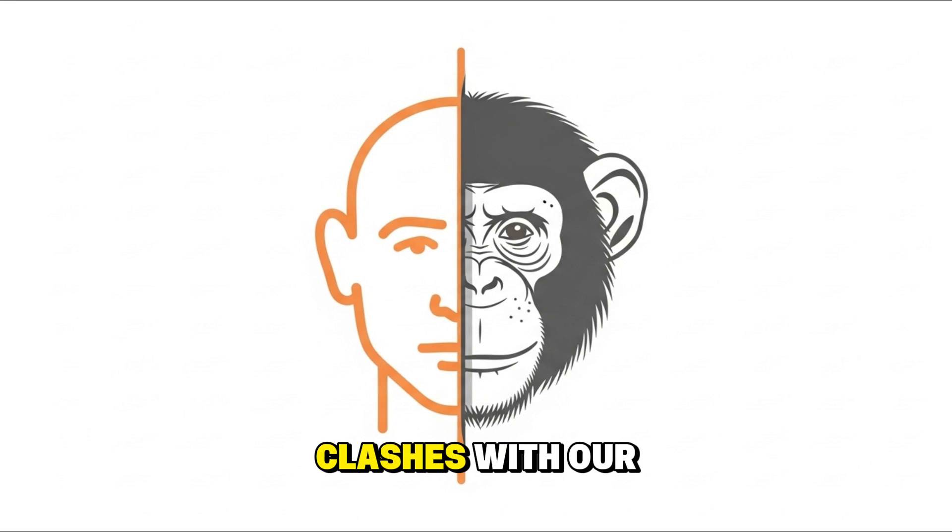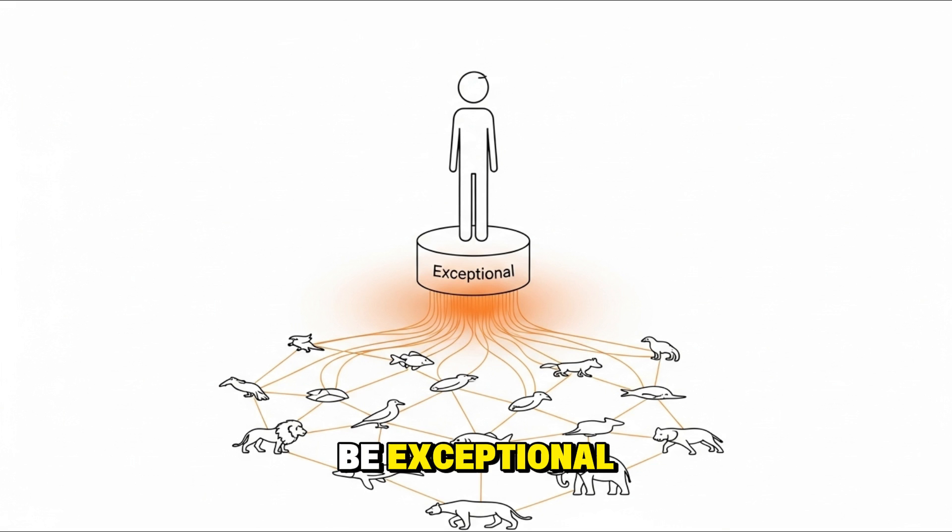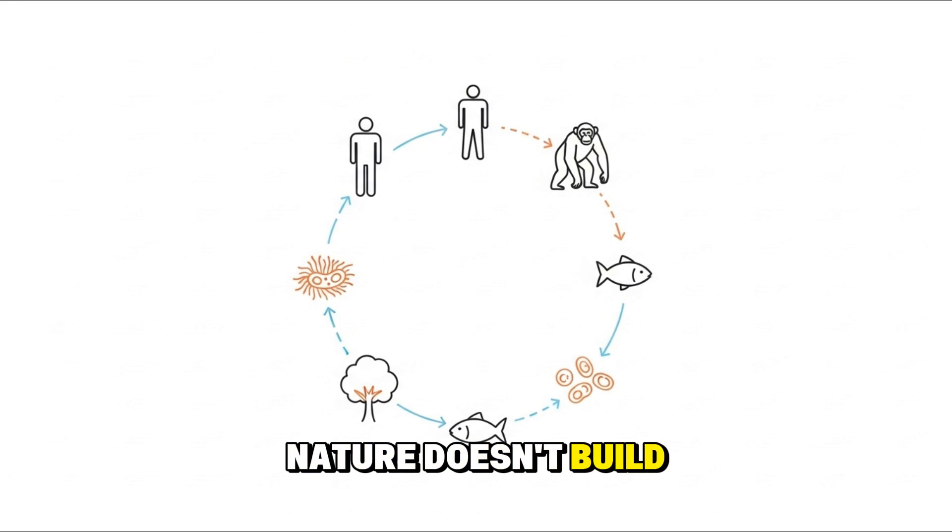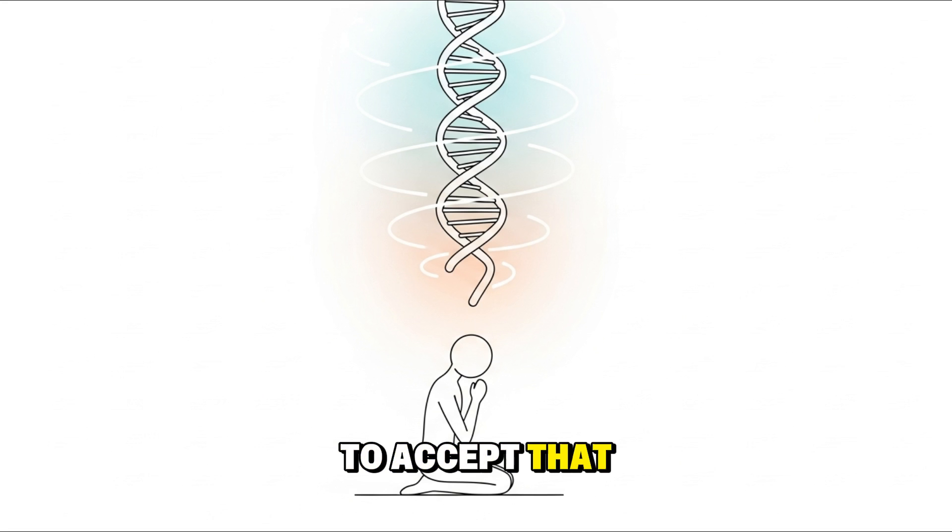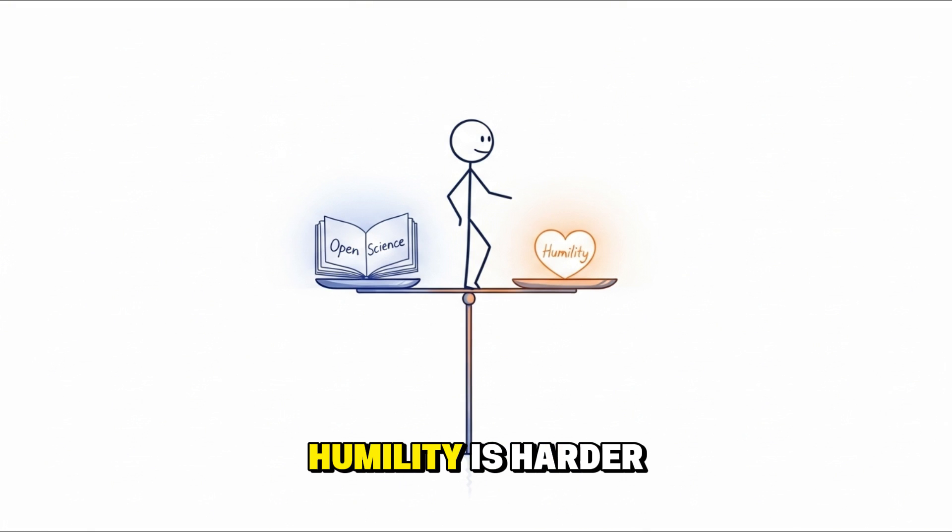Because the idea clashes with our ego. It blurs the line between us and them. We want to be exceptional, not connected. But nature doesn't build hierarchies. It builds systems. Interconnected. Adaptive. Equal in purpose. To accept that is to humble ourselves before the truth. And for some, humility is harder to learn than science.